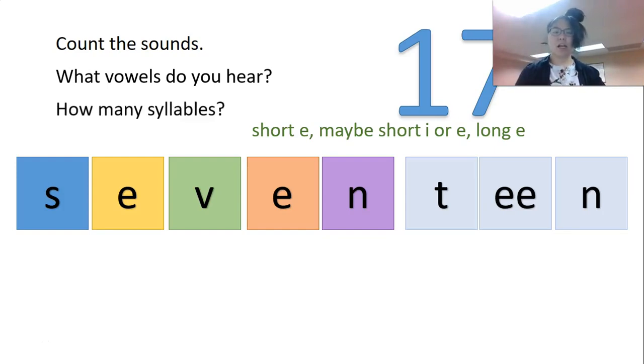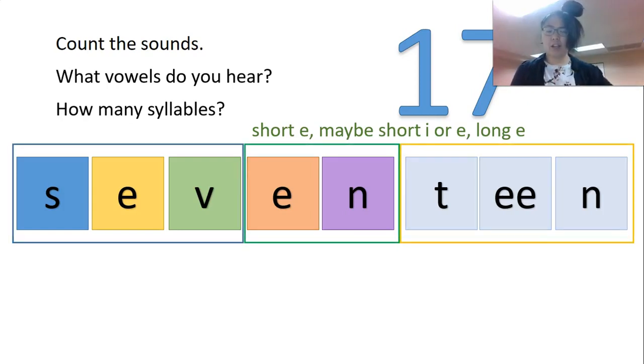So how many syllables? How many syllables? Seventeen. This one has se-ven-teen. This one has three. This one has se-ven-teen. Three syllables.